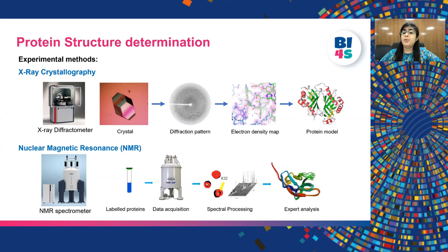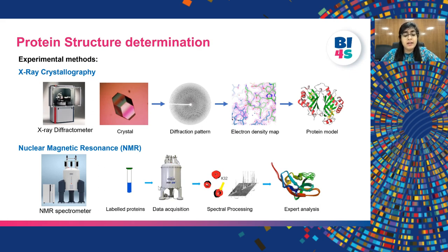There are different ways by which protein structures can be determined. The first is experimental methods. For example, X-ray crystallography and nuclear magnetic resonance (NMR). For X-ray crystallography, the protein is made into a crystal form and then X-rays are passed through the spaces of the crystal. The rays bend and form a diffraction pattern, which is then used to create a protein model. In NMR, the molecular structure is studied by exploiting the magnetic field around the atomic nuclei of the molecule. The protein is used in solution and by applying a magnetic field, spectra are recorded, processed, and the protein structure is deduced by experts.